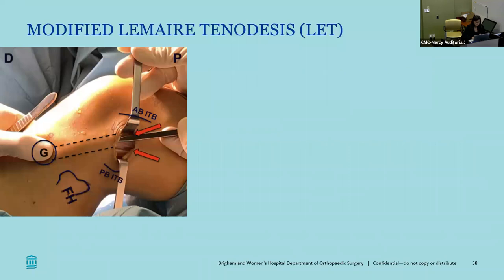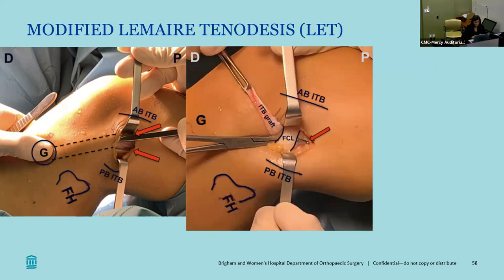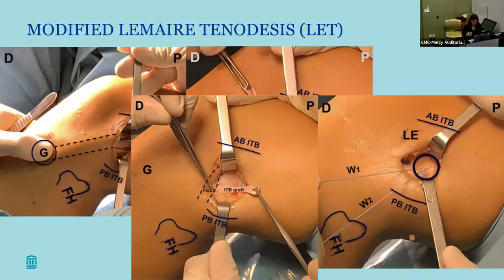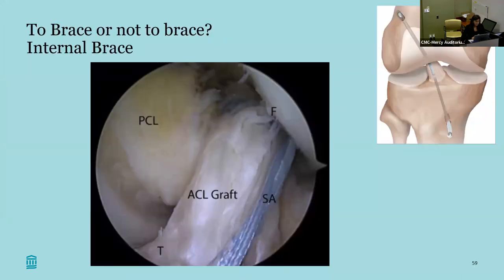The modified Lemaire — or LET — is done through a fairly small incision on the lateral side. You take a slip of your iliotibial band, slide it under your LCL, and fix it on the femur. It's pretty quick and easy. In most of my female athletes, unless they're very lax, I'm usually not using an ALL or LET in a primary ACL, but I almost always use it for revisions.